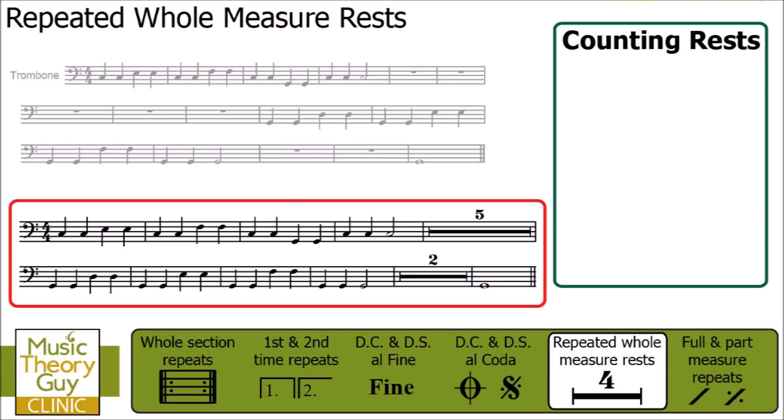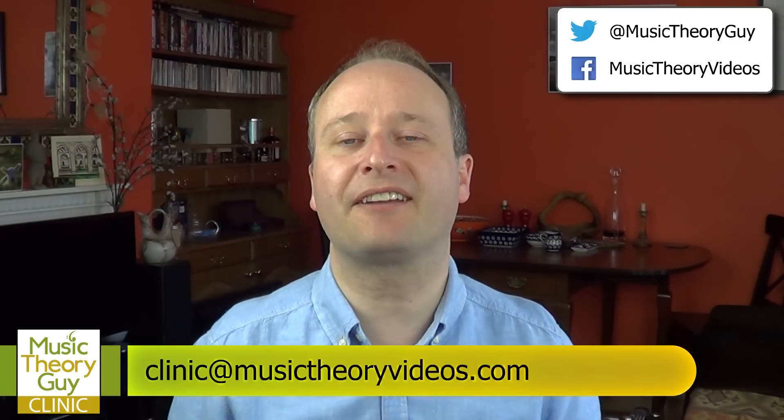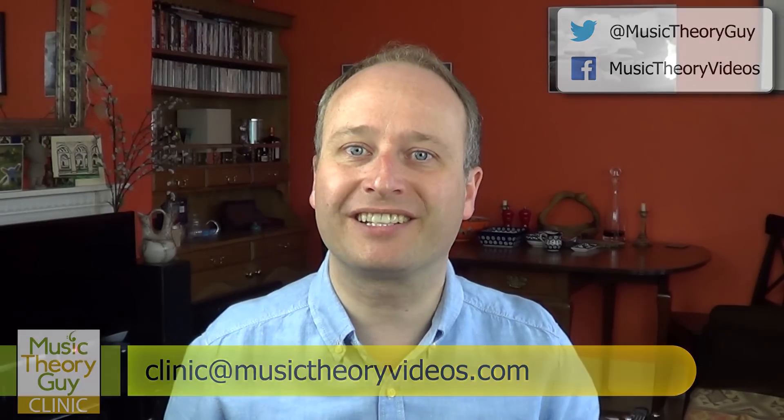And that's pretty much it when it comes to repeated whole measure rests. All you've got to look out for is that thick black line and the number above it — that number will tell you how many bars or measures you've got to count where you're not playing. I hope that's been useful to you, Gilberto, and anybody else watching. If any of you have any further questions about music theory, please do get in touch. I look forward to receiving your emails and messages via Twitter and Facebook. Many thanks for watching.